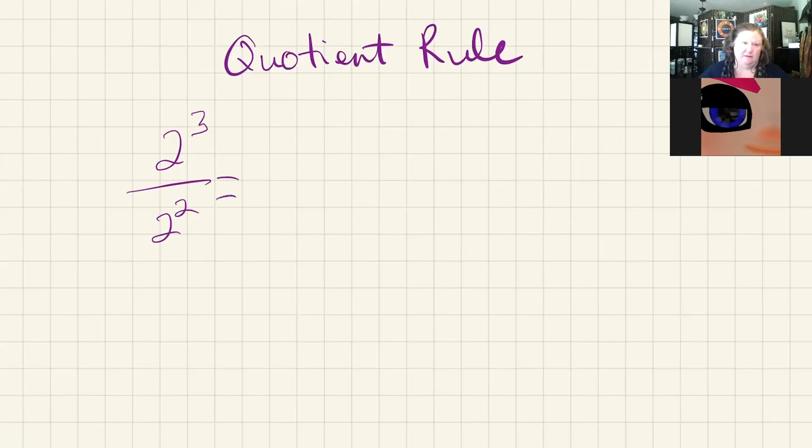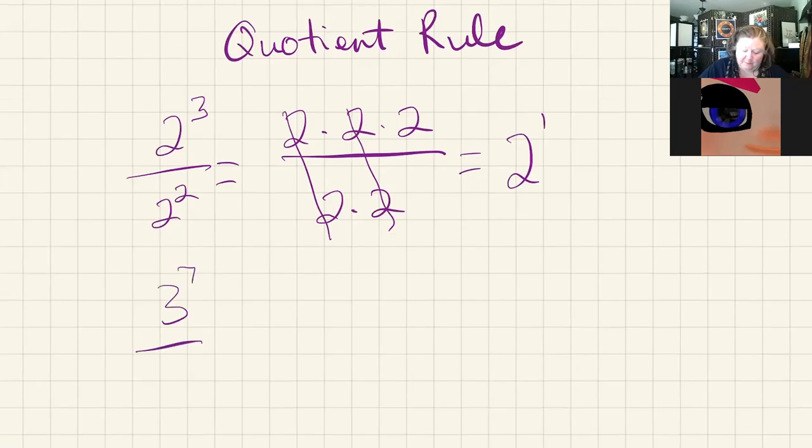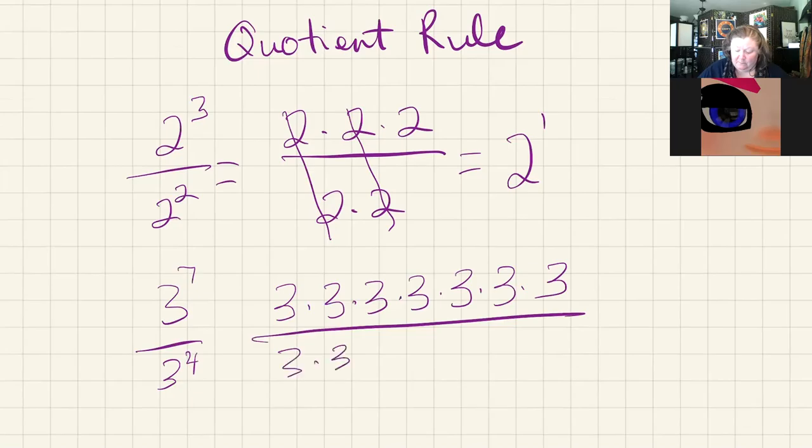And the filled out one is showing that what we would do in that case is show two times two times two divided by two times two. And then it shows that we cancel these, leaving just two to the first power. And then it has you looking at three to the seventh over three to the fourth. And I want you to write this out to show how tedious this becomes by doing this over and over. And that these would get cancelled.